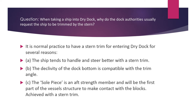The third reason is the sole piece, which is an aft strength member and will be the first part of the vessel's structure to make contact with the blocks. This is achieved with a stern trim. Since the forward draft is much lesser than the stern draft, as water is pumped out of the dry dock it is the stern that sits first on the dock bottom on the sole piece — the aft strengthening member — making stern trim the preferred and safer arrangement.